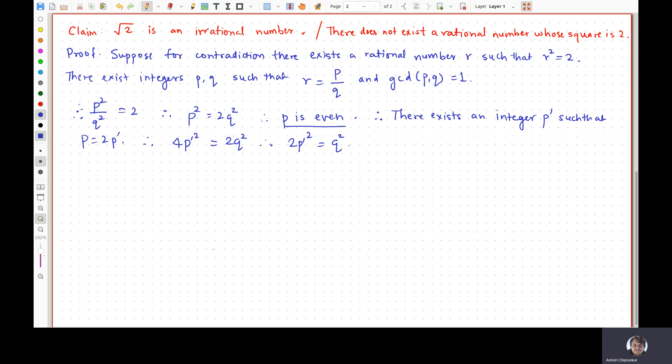Now we are in a position to apply the same argument. Look at the left hand side. Left hand side is 2 times the square of an integer, right? So it is even. Therefore, the right hand side must be even and that implies that Q is even.